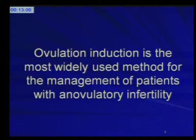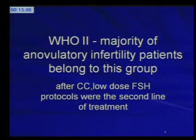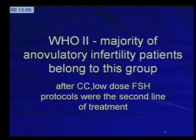Ovulation induction is the most widely used method for the management of patients with anovulatory infertility. The WHO categorizes anovulatory patients, and especially the group two patients, where the majority are anovulatory and consisting mainly of polycystic ovarian patients. In these patients we require ovulation induction, especially after clomiphene citrate has not worked. The low-dose FSH protocols are the second line of treatment in this group of patients.